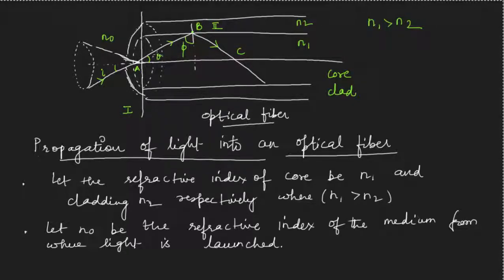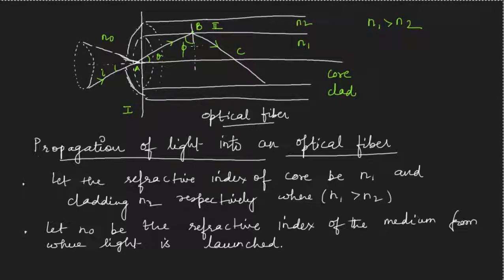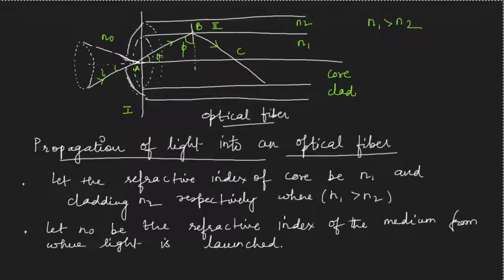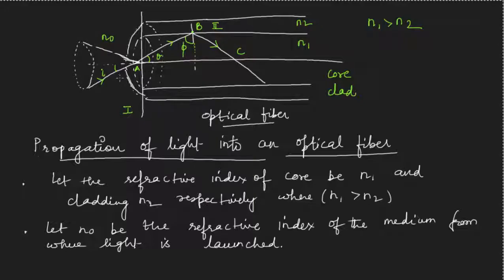Light is launched from outside the fiber at angle i. This light moves inside the fiber and refracts at angle theta, then strikes the core-clad interface at angle phi. My demand is to find the condition when this angle phi is more than the critical angle. I cannot find the condition on phi directly as it is inside the fiber. However, phi is related to theta because they form a right angle triangle, and theta is related to i — my incidence angle outside the fiber. So if I control i, this controls theta, which in turn controls phi.